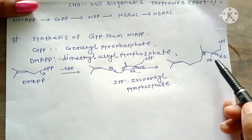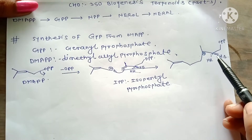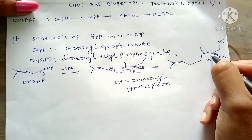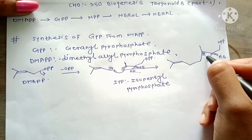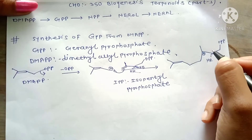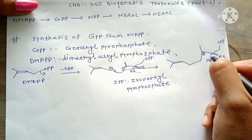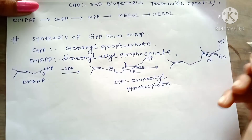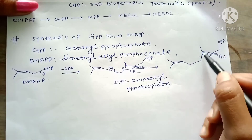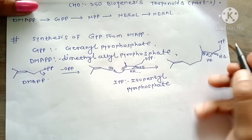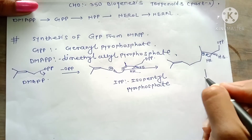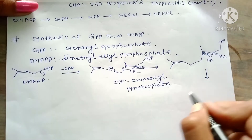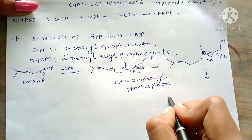Stereospecific loss of the HR proton stabilizes this tertiary carbocation. The bond shifts here to stabilize the carbocation, and the structure of GPP is formed.